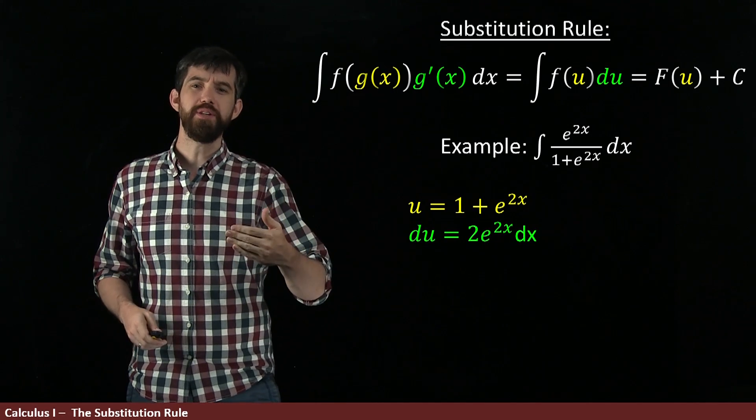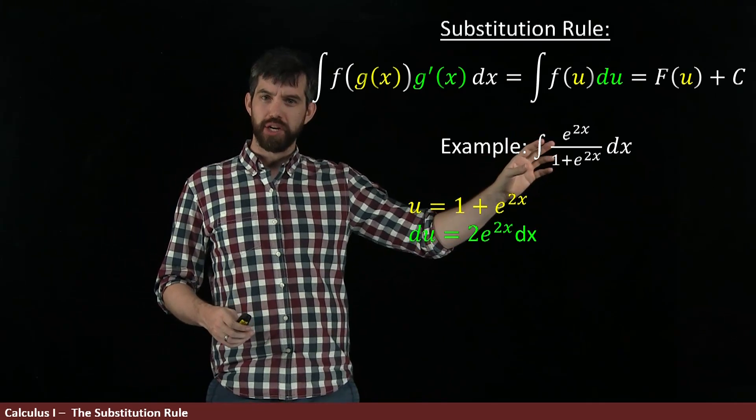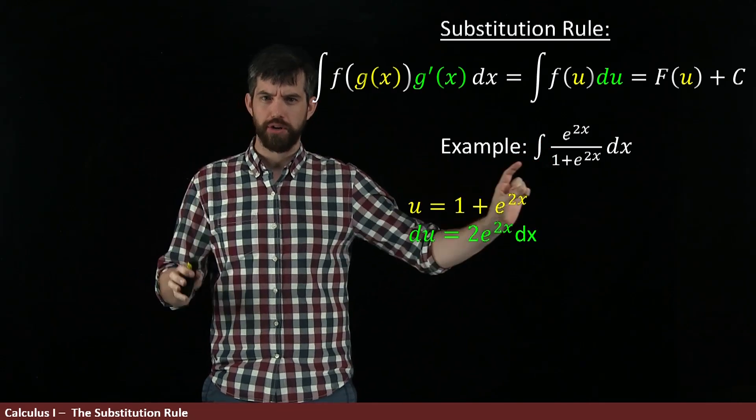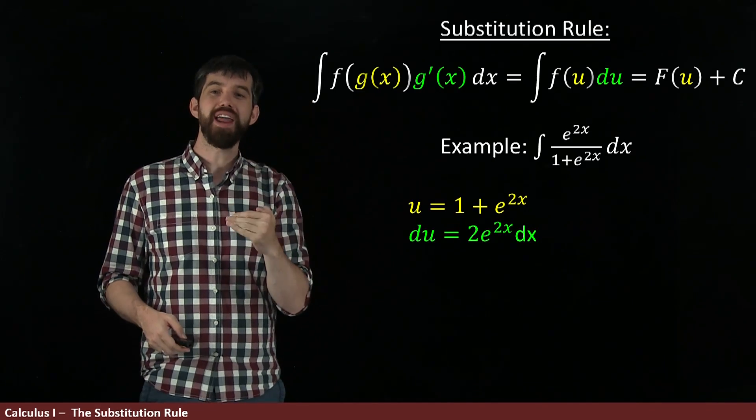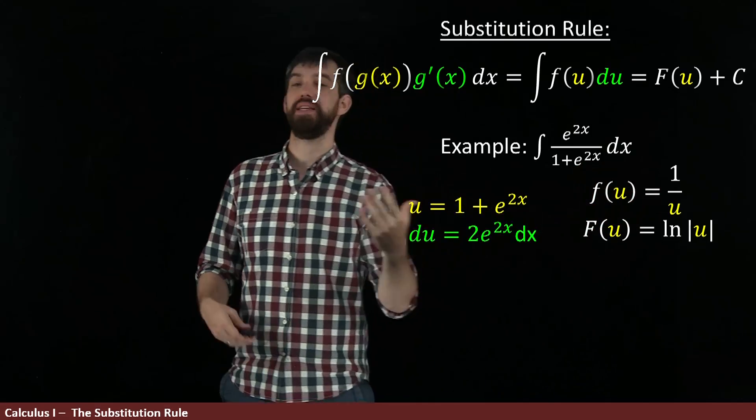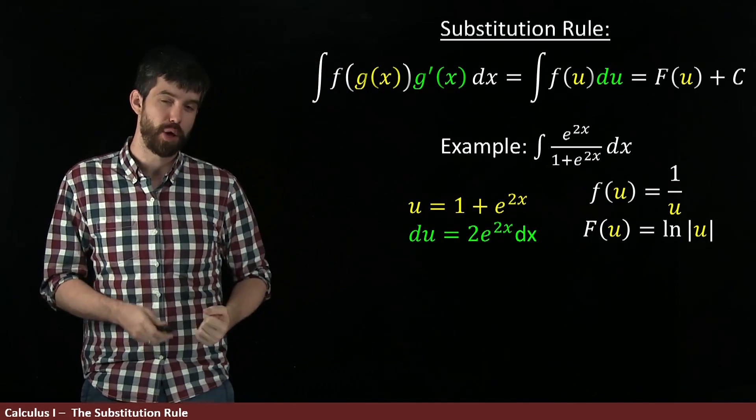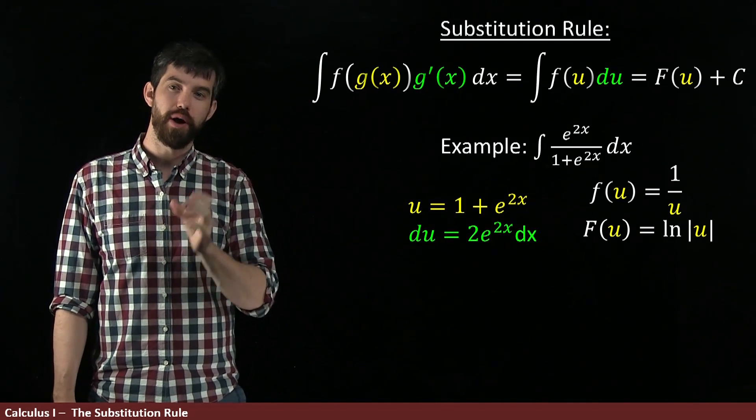Now, if I think about this expression, the place where u occurs is on the denominator. So I think my f looks like 1 divided by u, and if we set my f to be 1 over u, that means that the capital F, the anti-derivative of the lower case f, is just going to be the natural logarithm of the absolute value of u.